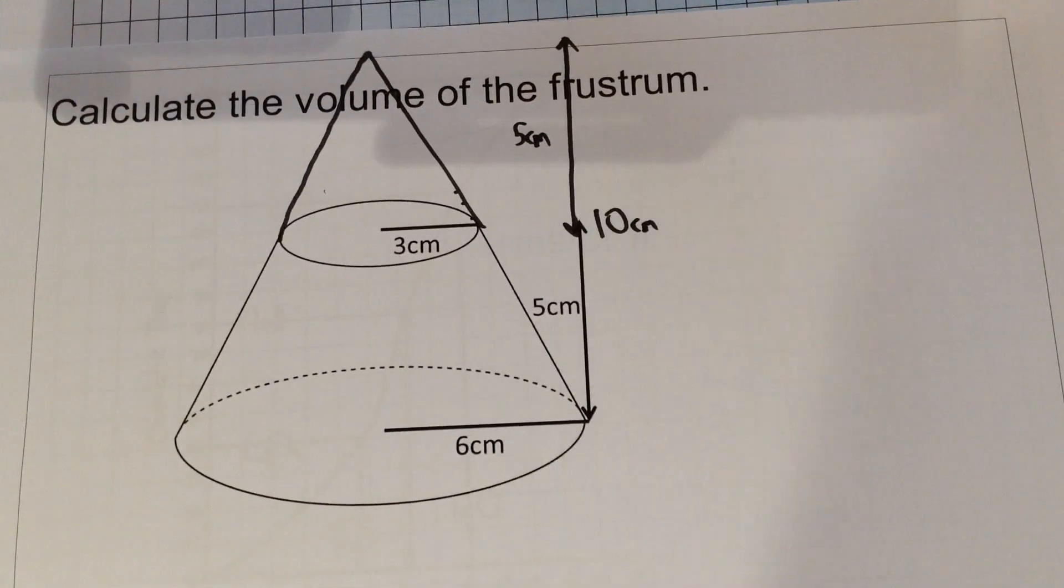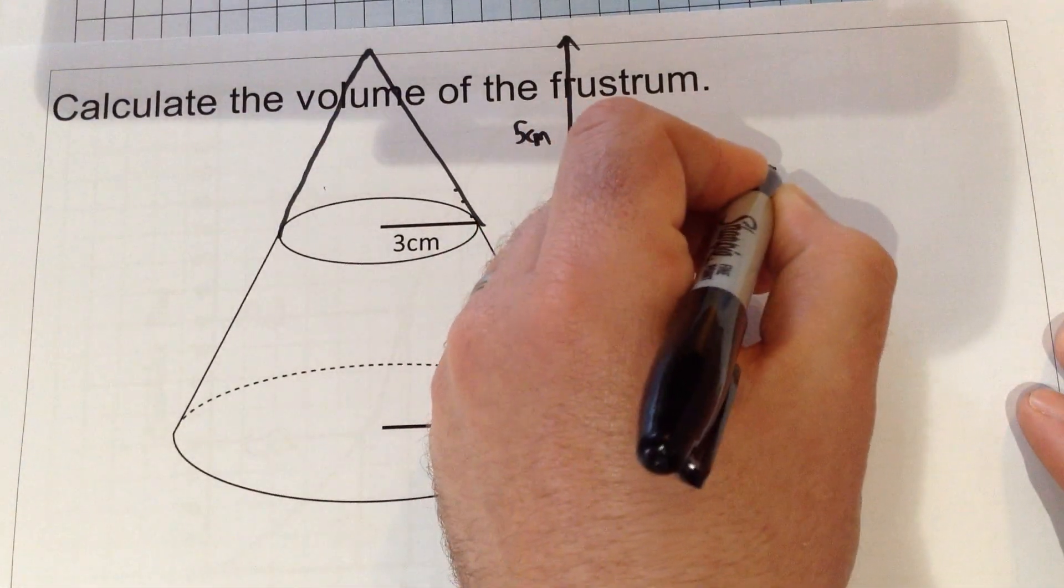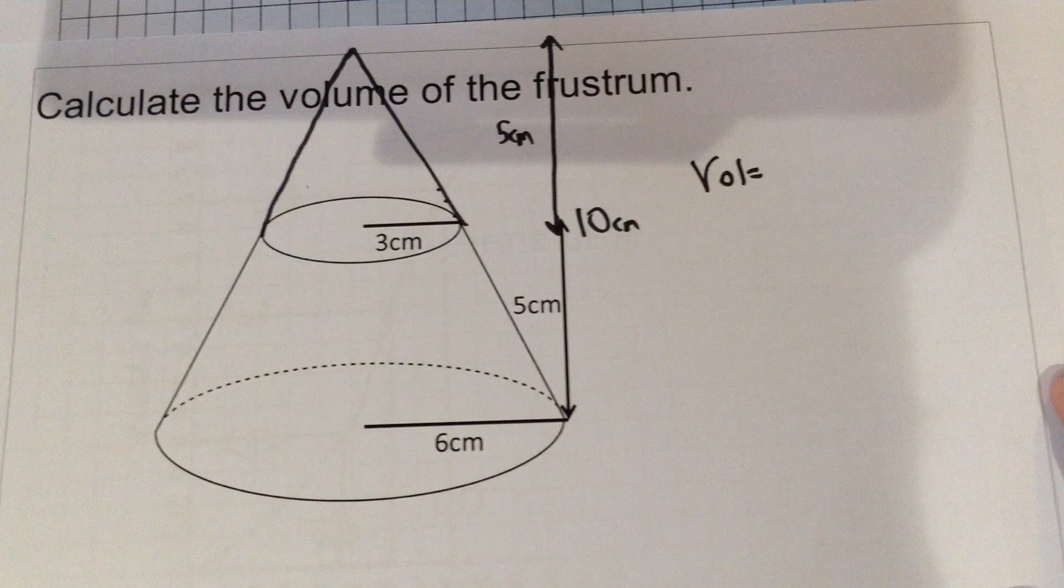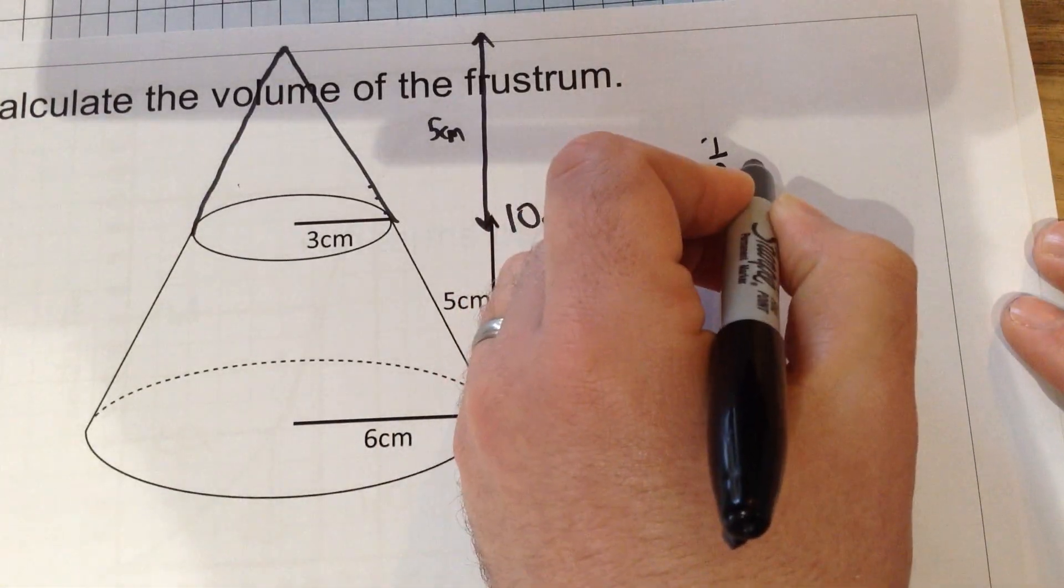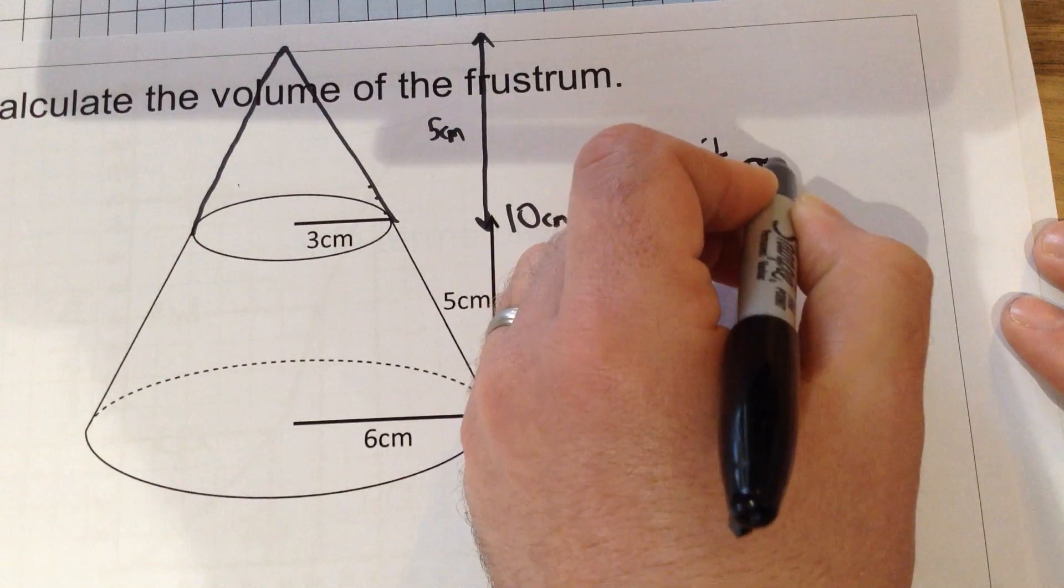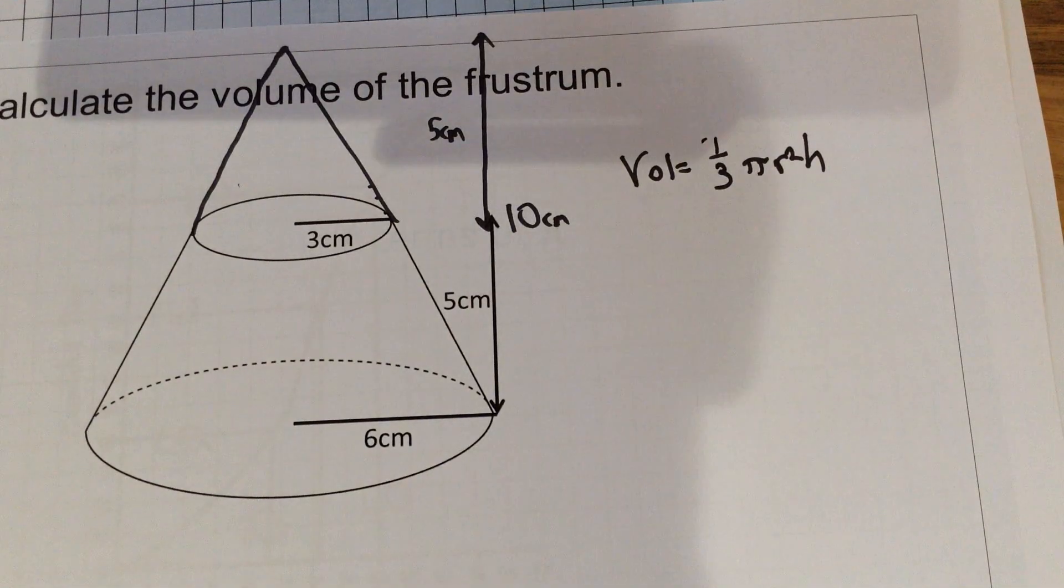In order to now work out the volume of the two cones, I'm going to start with the large cone. We need to know the volume formula. The volume formula that we're going to use is one-third pi r squared h. It might be worthwhile trying to memorize that for the exam.